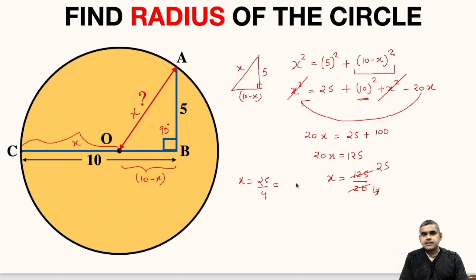Let us express it in decimals, so it will be 6.25. So 6.25 is the value of X and what is X? X is the radius of the circle and hence radius of the circle equals 6.25 units.